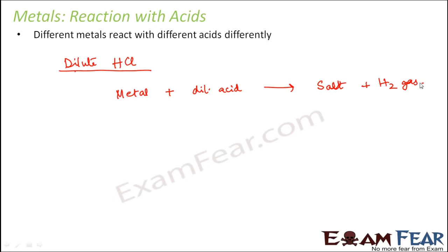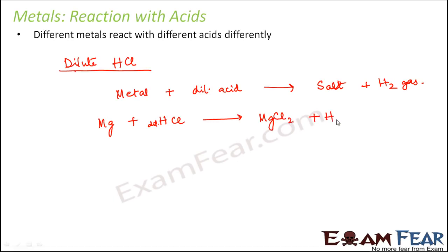However, the reactivity of various metals is different. Let us take the example of magnesium. When magnesium reacts with dilute hydrochloric acid, it forms a salt — magnesium chloride — and hydrogen gas is released. This reaction might not hold true for all metals, because magnesium has the highest reactivity with dilute hydrochloric acid.